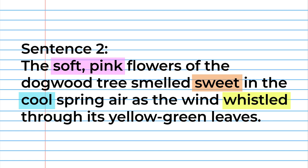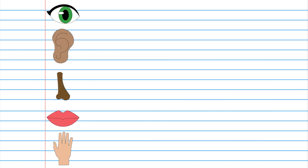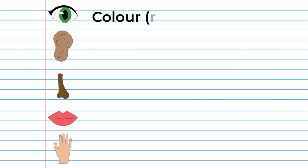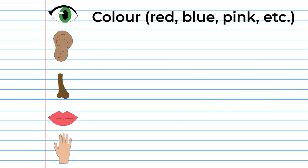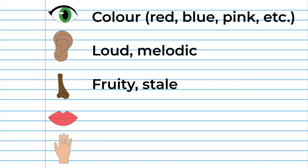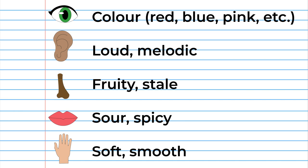There are different words you can use to evoke each sense. For example, you can use things like color to appeal to sight, words like loud or melodic to appeal to hearing, words like fruity or stale to appeal to smell, words like sour or spicy to appeal to taste, and words like soft or smooth to appeal to touch.